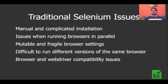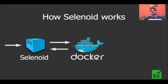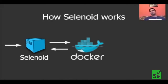Selenoid is a Golang application — a standalone server using Docker to launch browsers in containers. When you request to launch a browser, Selenoid uses Docker API to launch a container with that browser, and everything runs inside this container. When you finish running your test, this container is automatically removed, and your operating system remains in exactly the same state as before launching the test.